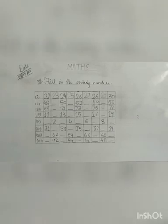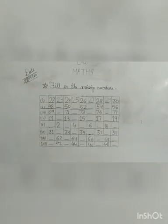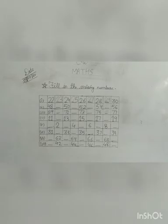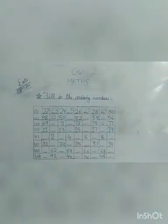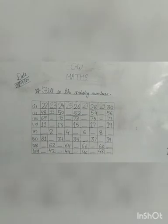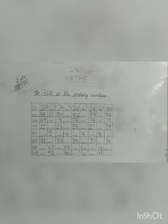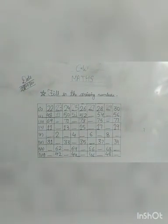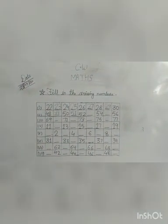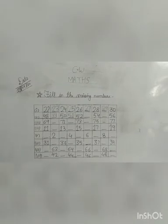Now the next line starts at 48. After 48, what we will write? 49. So write 49 here. After 49, 50 is written here. What comes after 50? Yes, 51. So write 51 here. 52 is already written here. After 52? Yes, 53. So write 53 here.